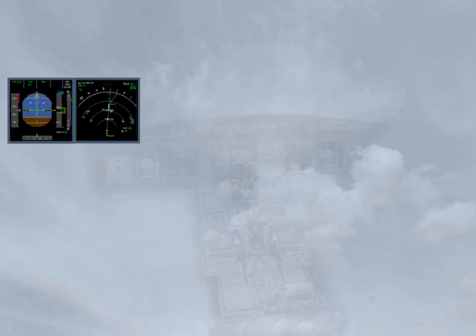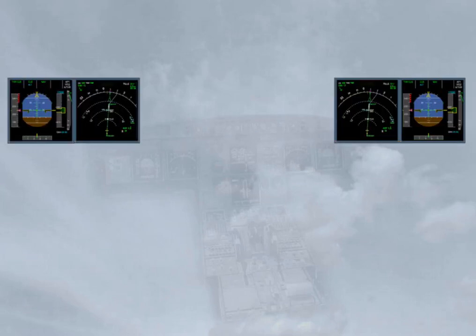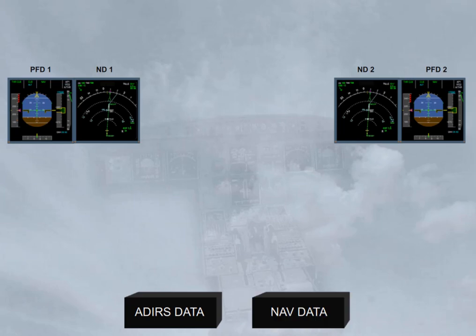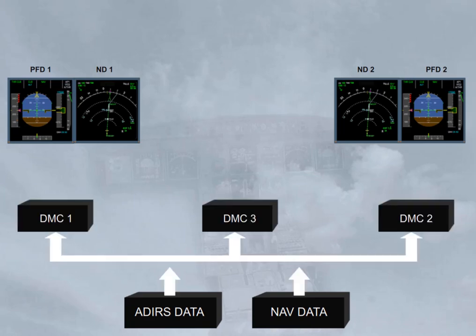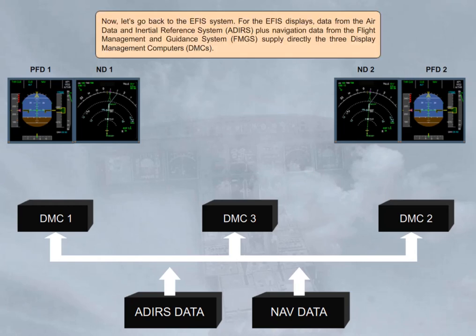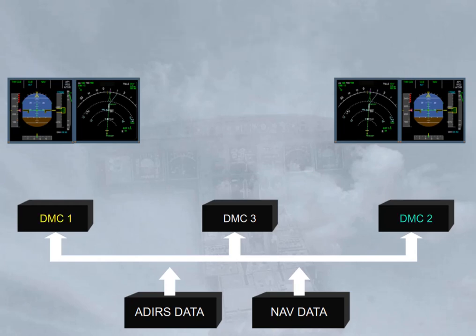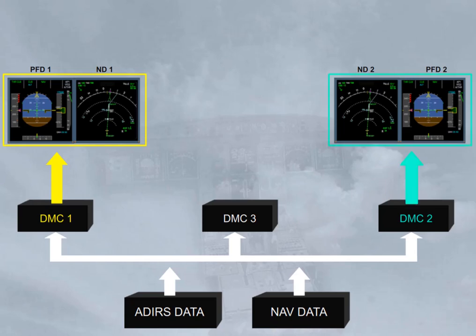Let's go back to the EFIS system. For the EFIS displays, data from the Air Data and Inertial Reference System (ADIRS), plus navigation data from the Flight Management and Guidance System (FMGS), supply directly the three Display Management Computers (DMCs). The three identical DMCs process the data and generate the images to be displayed. In normal operation, DMC-1 supplies EFIS information to the captain's PFD and ND; DMC-2 supplies the first officer's PFD and ND; DMC-3 is available as a backup.